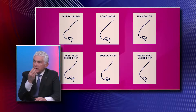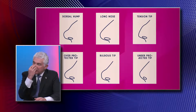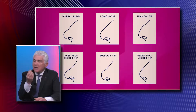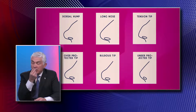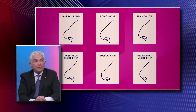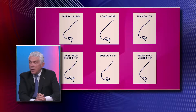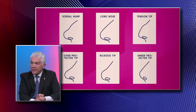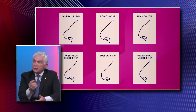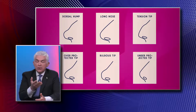The bulbous tip is when your tip has no defined shape and you want a more angular appearance — that's a great candidate for the open technique. For the under-projected nose, you can also often use the open technique because you can place cartilage grafts.